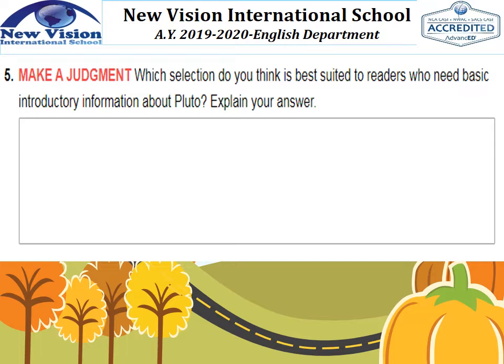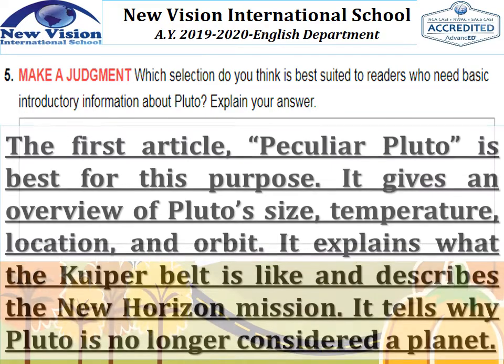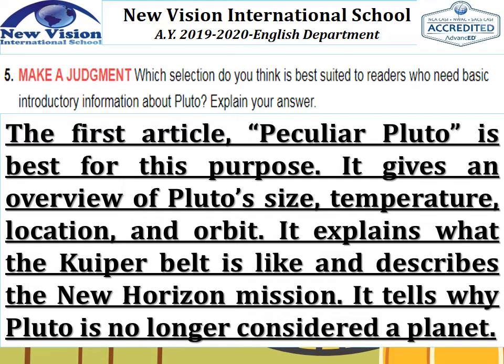We are now on the last two questions. Number five, make a judgment: which selection do you think is best suited to readers who need basic introductory information about Pluto? It could be the first, which is entitled Peculiar Pluto. It gives an overview of Pluto's size, temperature, location, and orbit. It explains what the Kuiper Belt is like and describes the New Horizons mission. It tells why Pluto is no longer considered a planet without making it a debate.